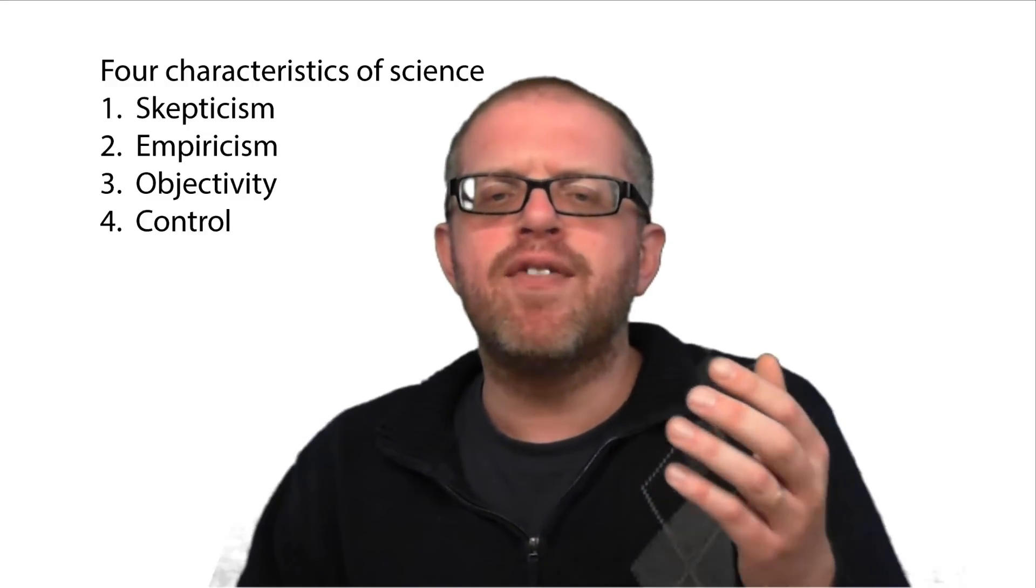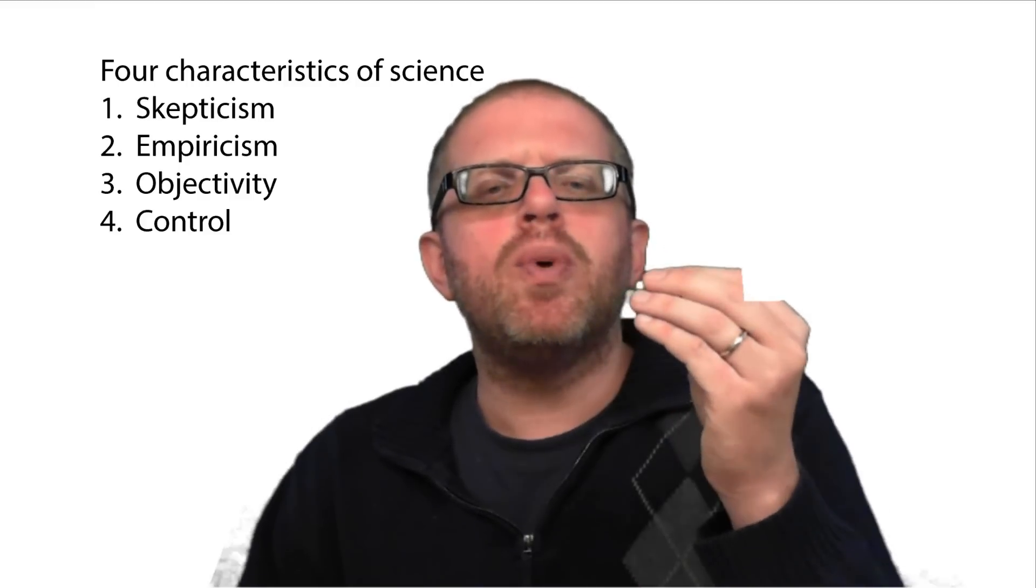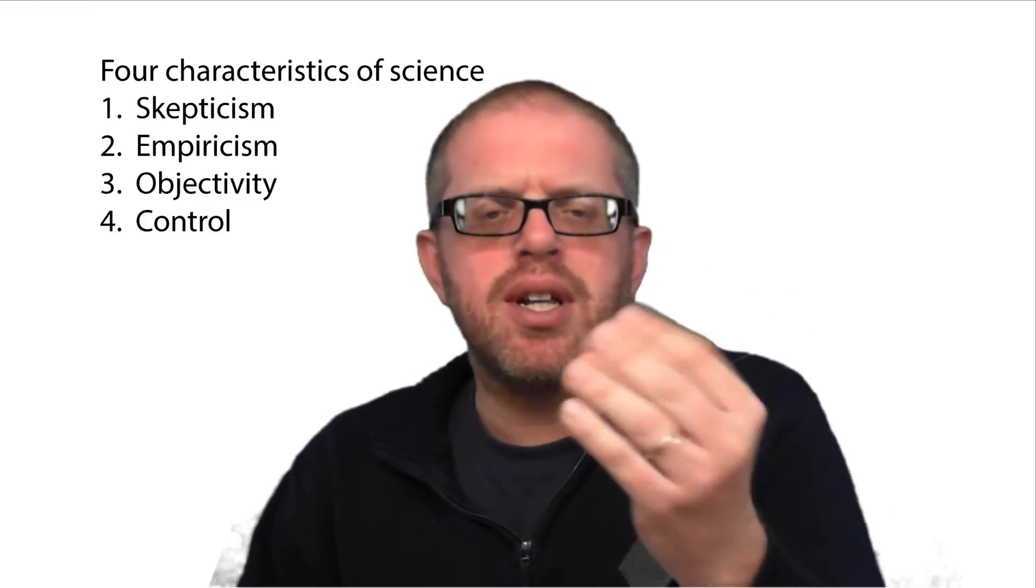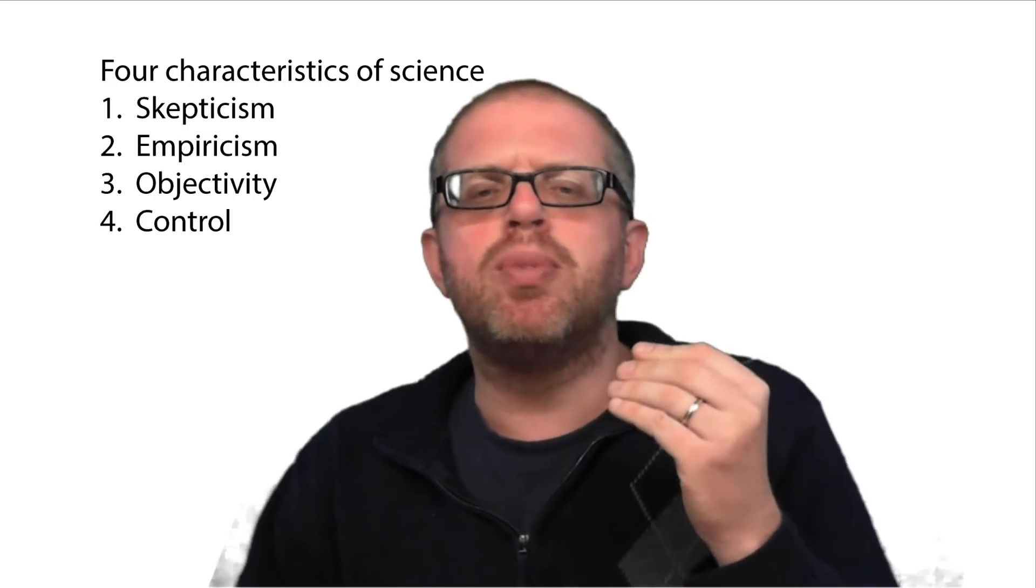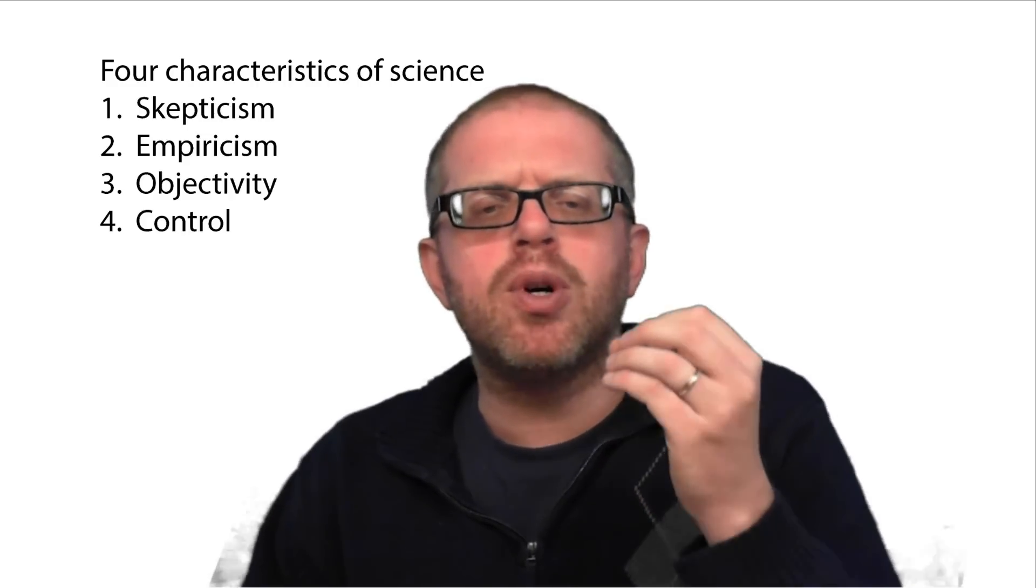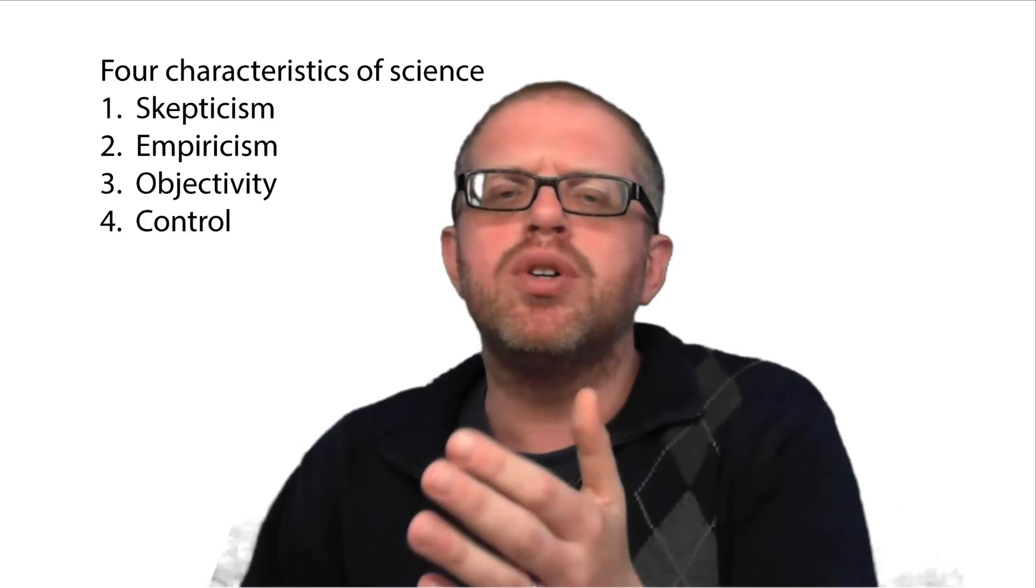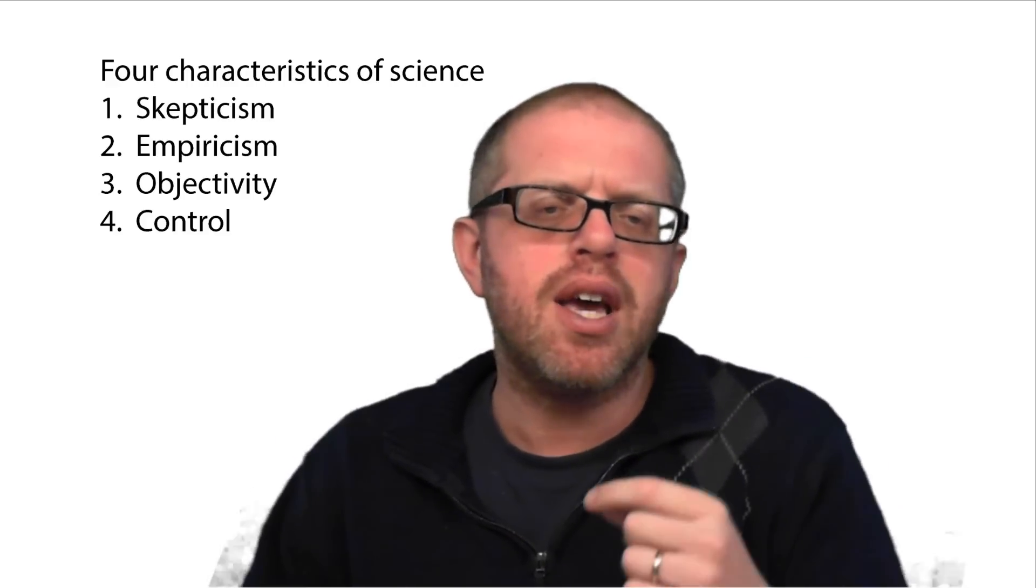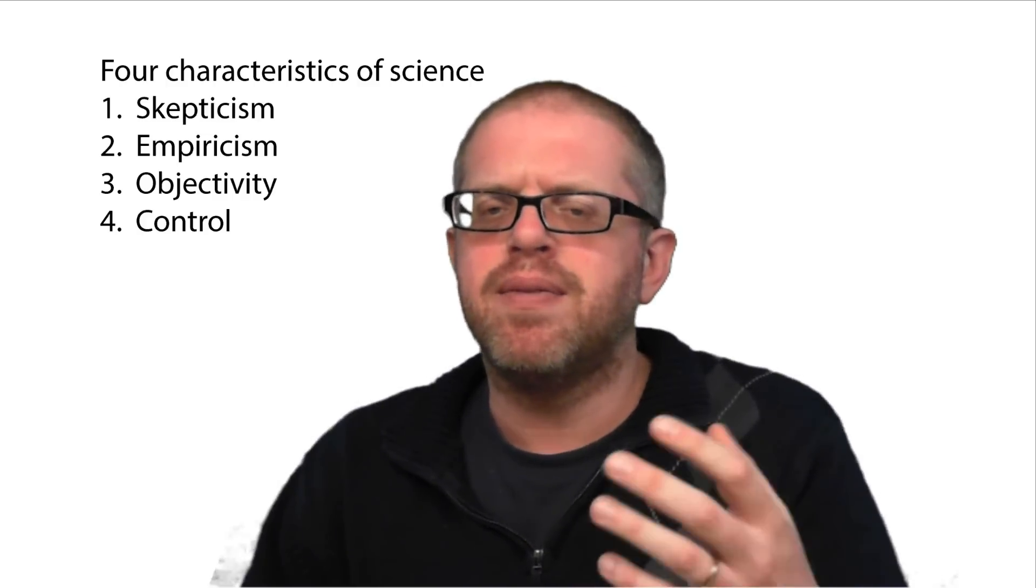Skepticism—that's the idea that information isn't just accepted on faith. Empiricism—that's when we don't accept a claim until it's been substantiated by observable evidence. Objectivity—that's a genuine desire to describe the world as it really is, and not merely prove that the world is the way we want it to be. And control—those are procedures to ensure that our inquiry is unbiased and accurate.